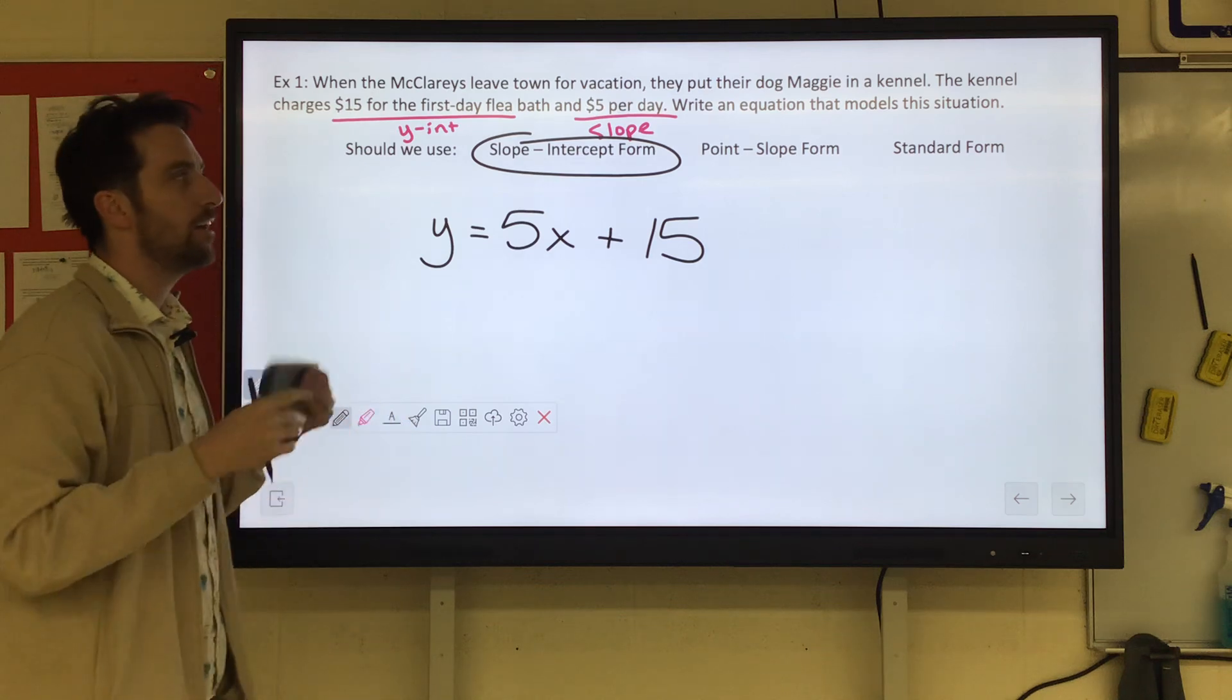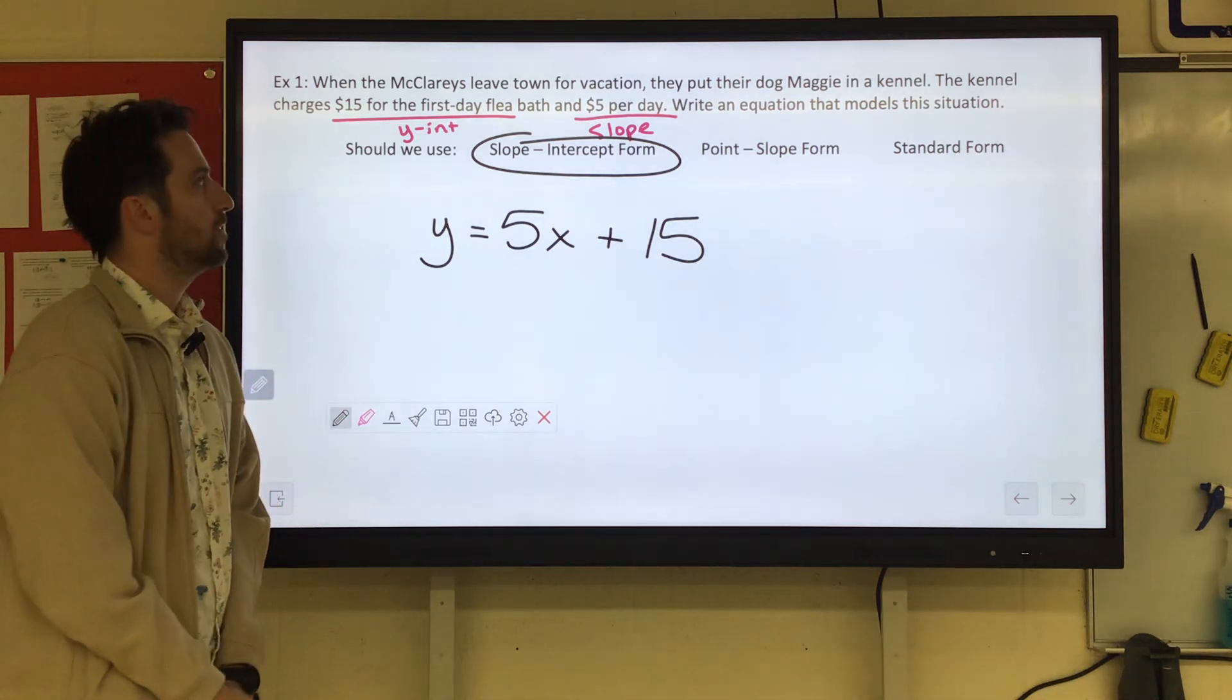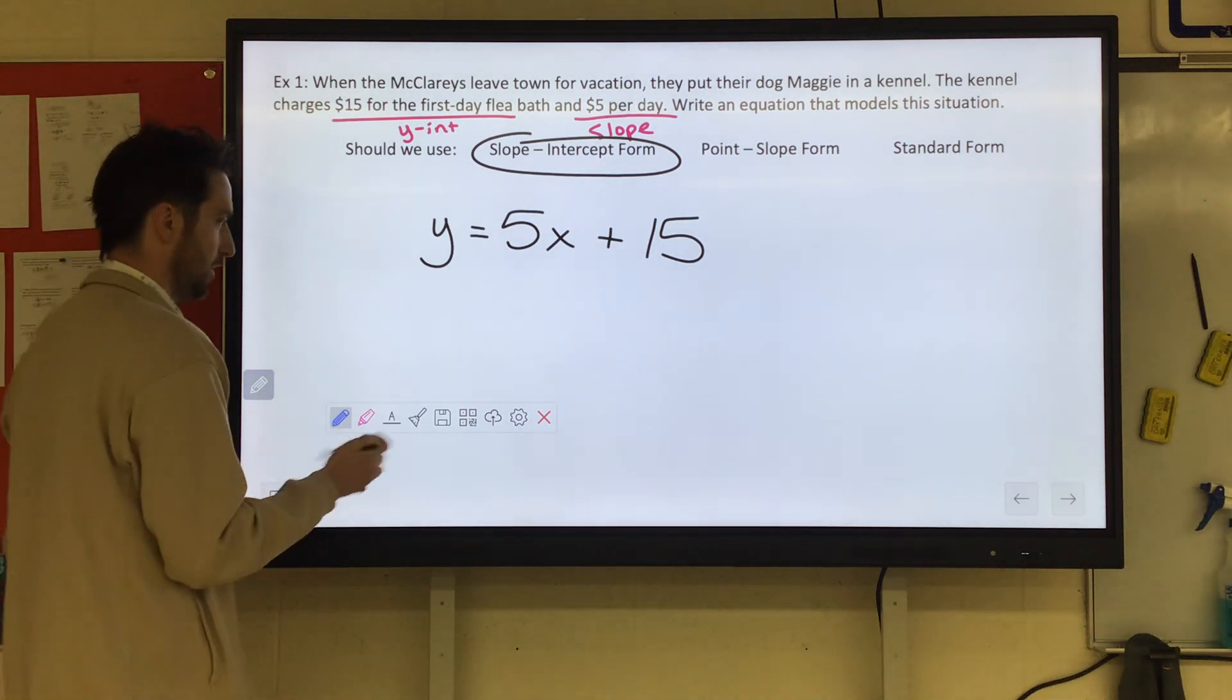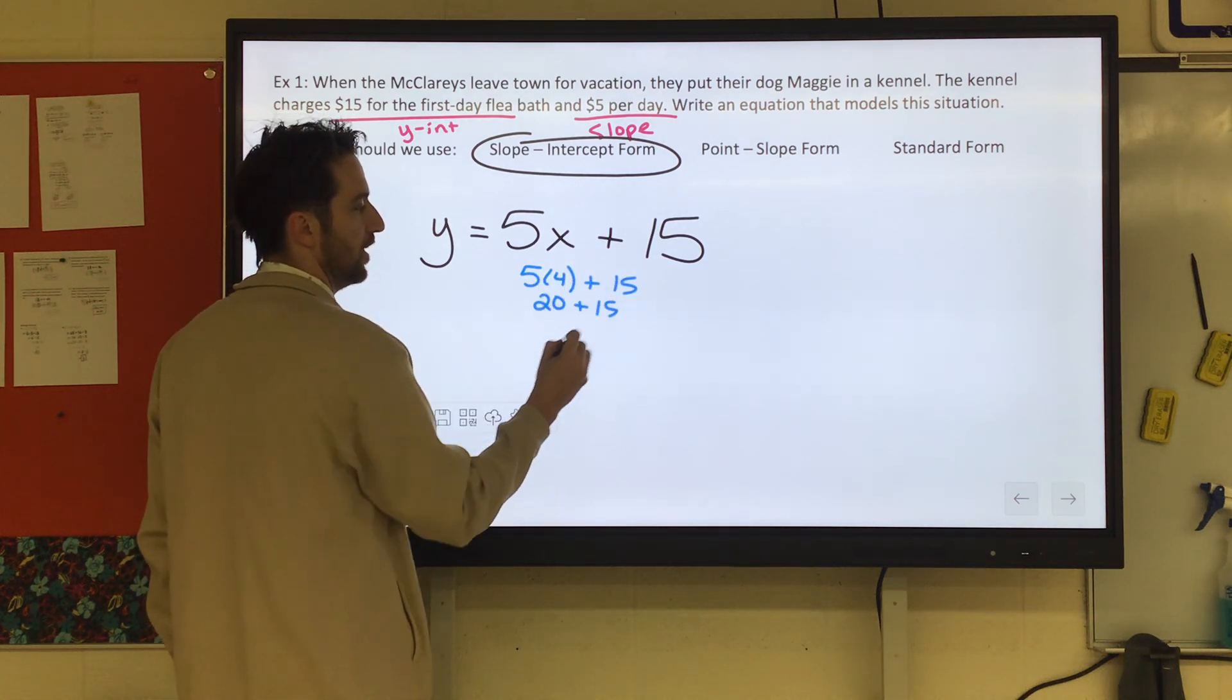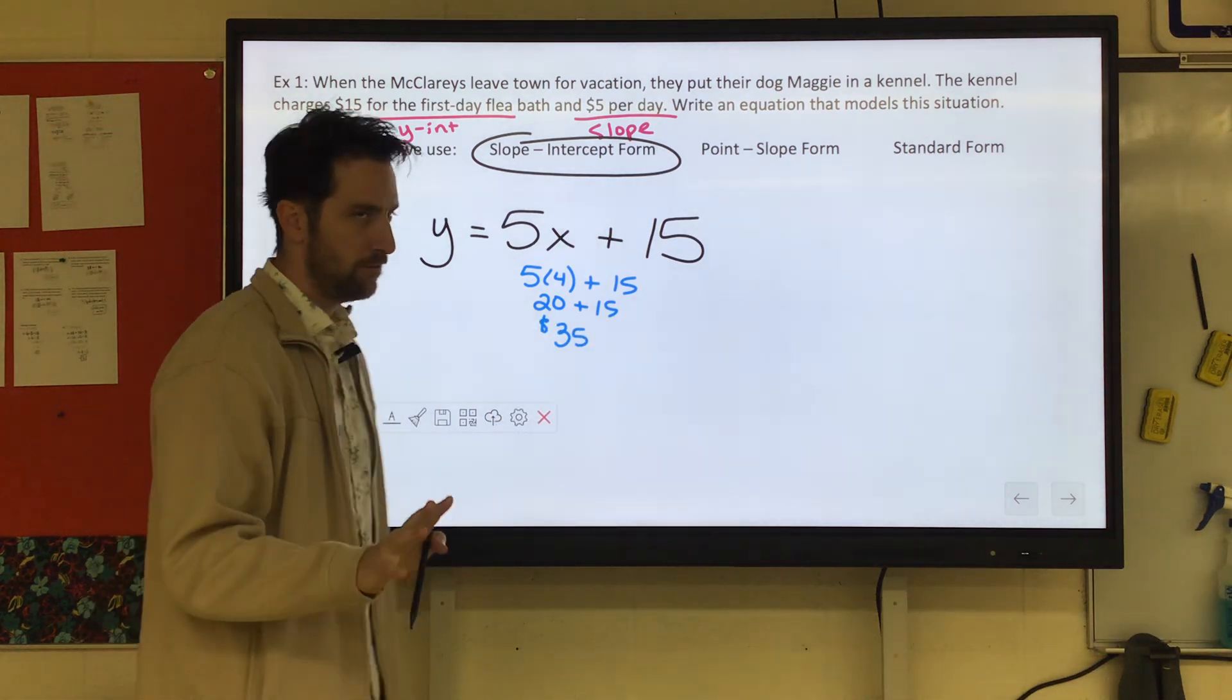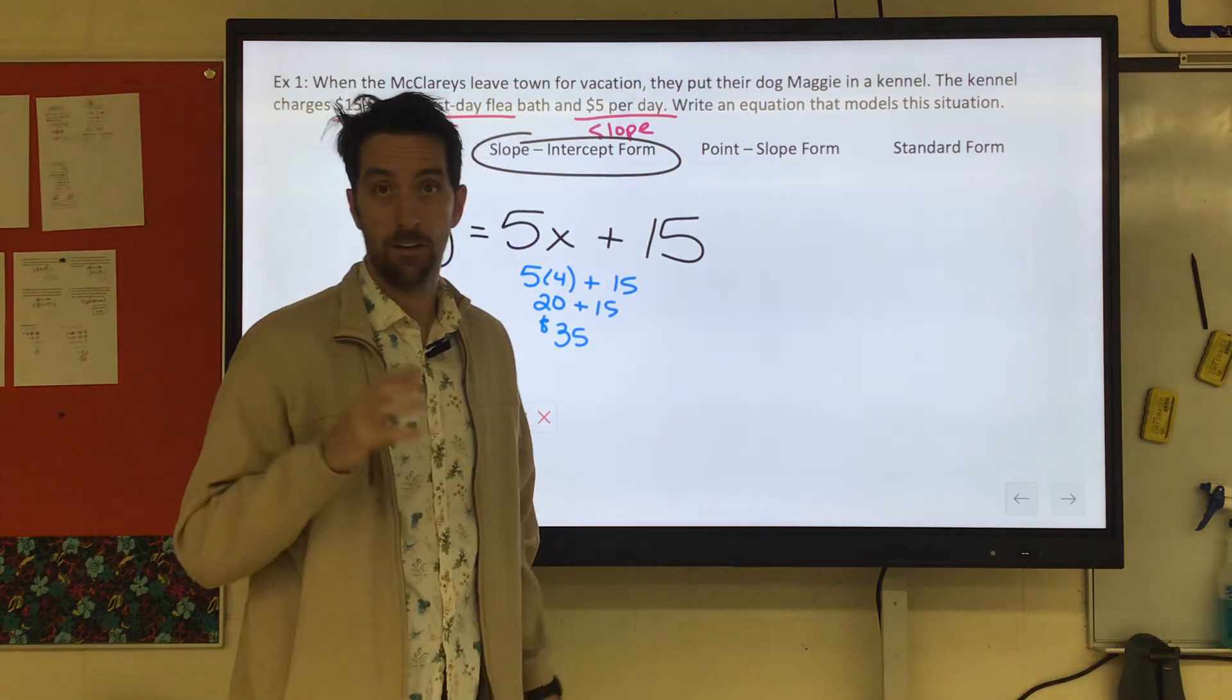There's our equation. That's it, man. Now a lot of times on this, they'll be like, well, how much would it cost if you kenneled Maggie for four days? So you'd be like, oh, cool. I'll put in four for x. That would give me $20 plus $15. Kenneling her for four days would just cost you $35. I would love to know what kennel that is, because that is an unbelievable deal. Unbelievable.